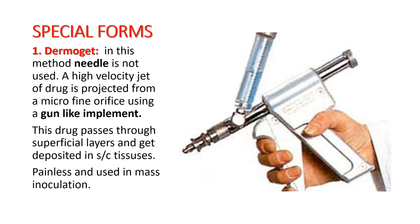Special forms of subcutaneous injection: first is the dermojet, where a gun-like implement injects the drug into the subcutaneous tissue without using a needle. A high jet velocity of drug is projected from a micro-fine orifice; the drug passes through the superficial layer of skin and is deposited in the subcutaneous tissue. It is painless and used for mass inoculation.